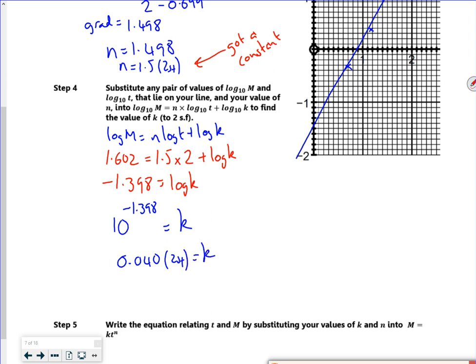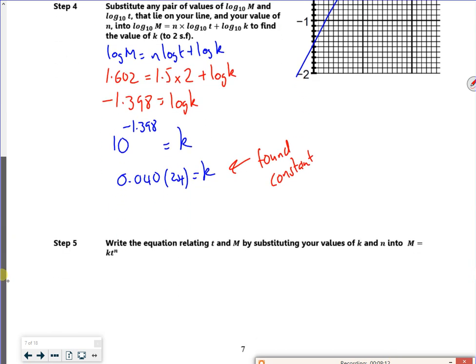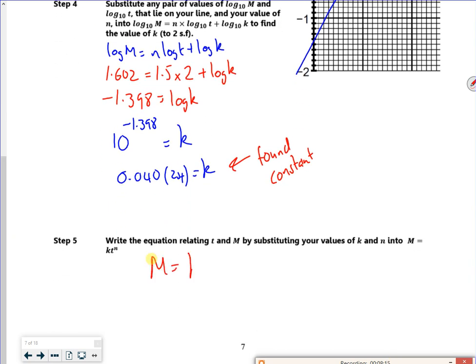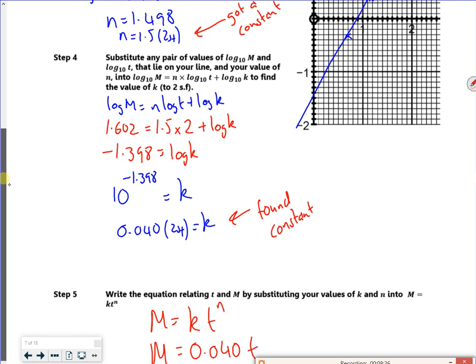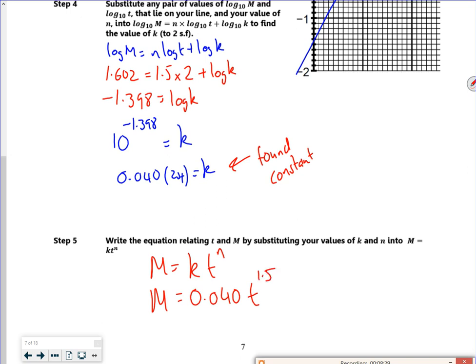So I have an equation with two variables and two constants. I make the curve into a straight line using log laws. I find the gradient and the intercept, and then that allows me to work out what the constants are. So my m equals k t to the n becomes m equals 0.040 times t to the power of 1.5. There. Phew.